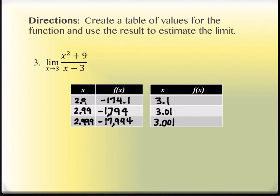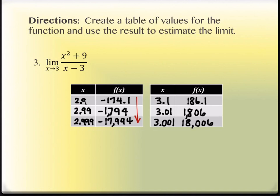For the 3.1 side, the first value is 186.1, then 1806, then 18006. All we did was change the sign. Going down the first table, the values are getting more and more negative — approaching negative infinity. Going down the second table, values are approaching positive infinity.